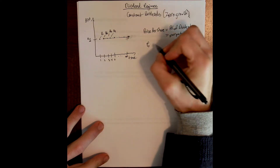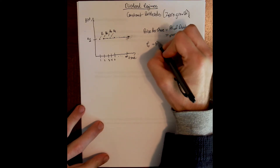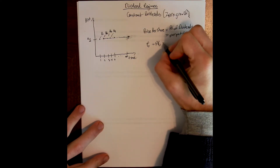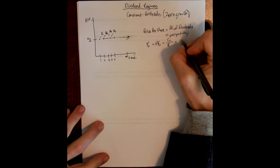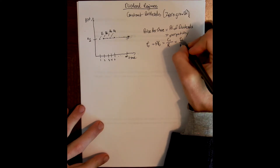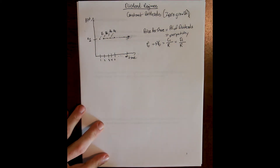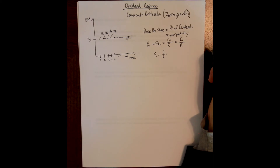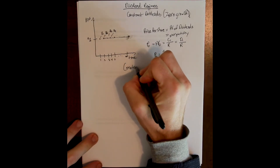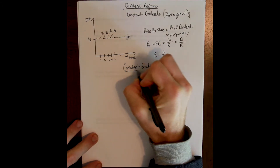We know that the price per share in this regime is the present value of the future dividends, and this is a simple perpetuity. So we write the price as P0, the present value today. The present value of a simple perpetuity is the first cash flow divided by the discount rate, written as D1 divided by r. So we solve this by dividing D1 by r — that gives us the price of the share of stock.